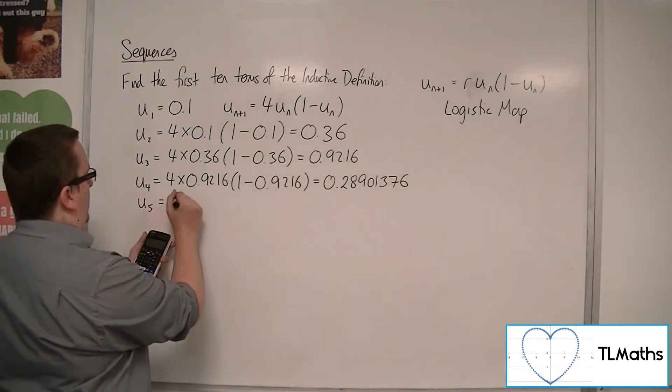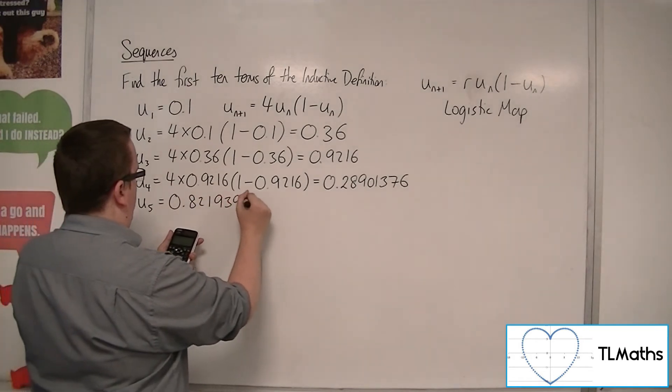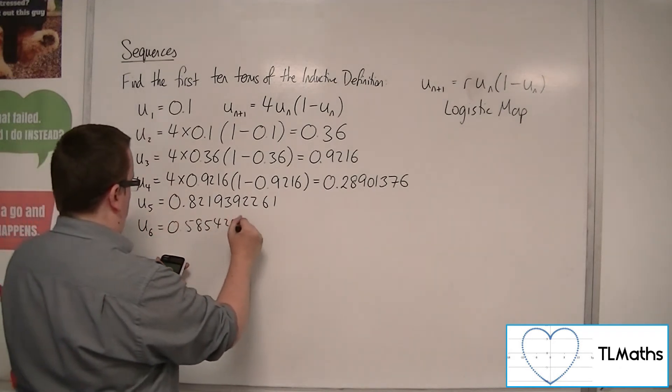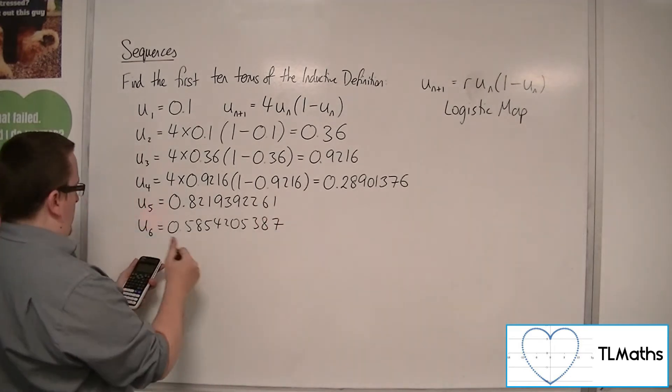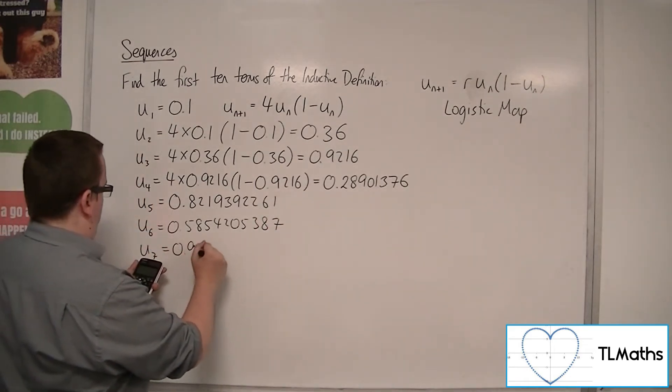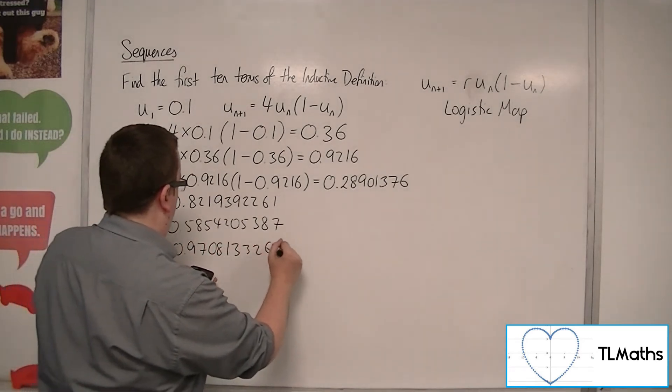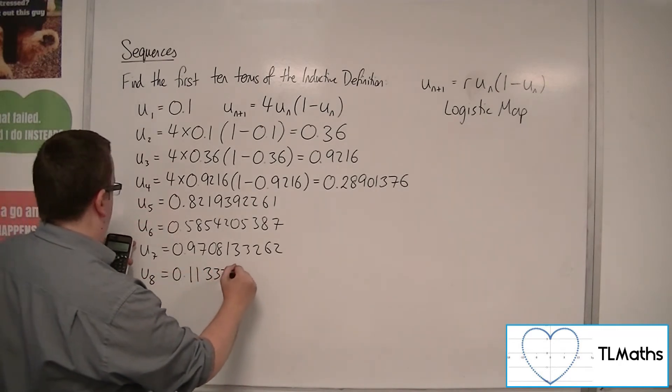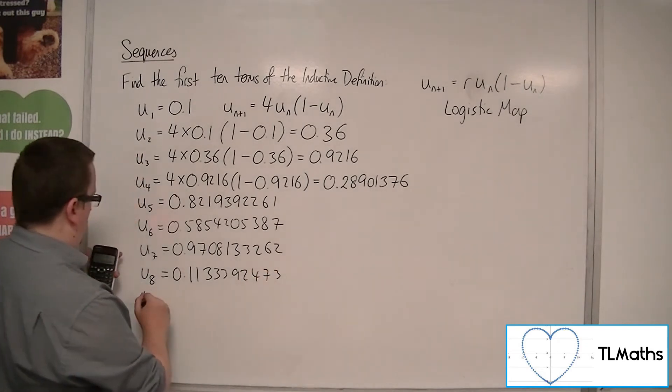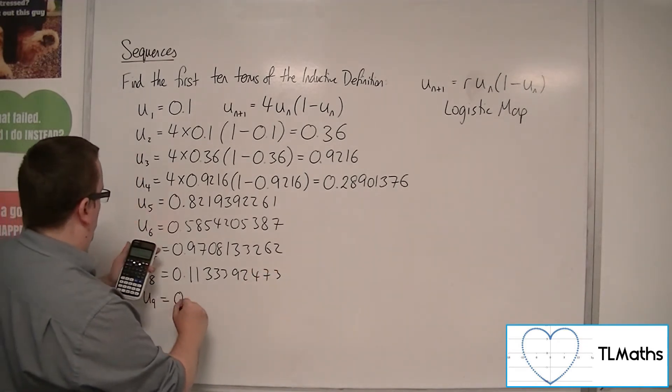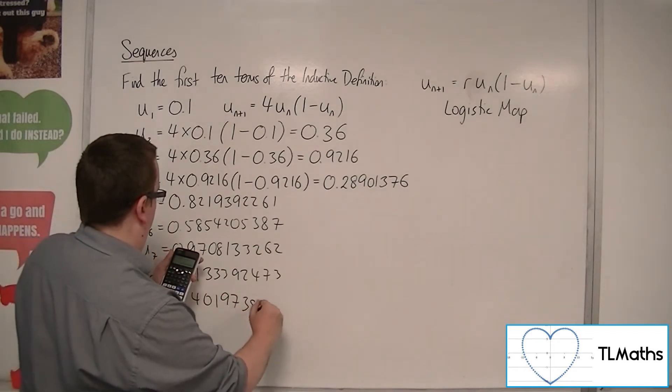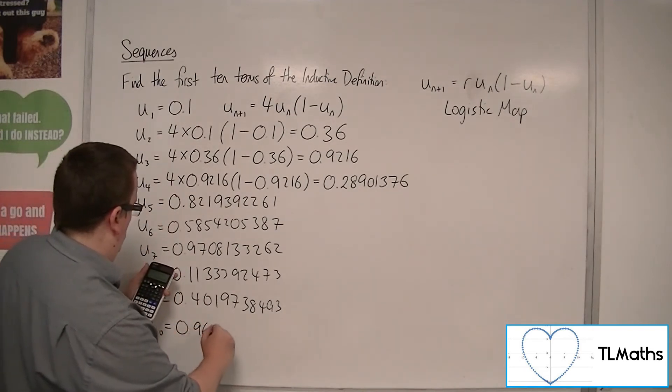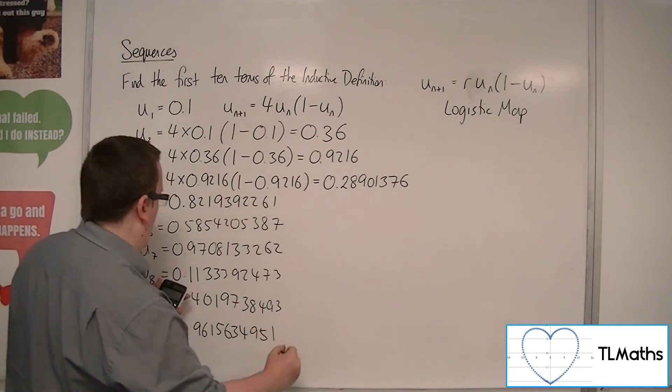Then the next term. So we're going to get 0.8219392261. Then U6 is 0.5854205387. Then we've got U7 is 0.9708133262. Then U8 is 0.1133392473. U9 is 0.4019738493. And then finally, U10 is 0.9615634951.